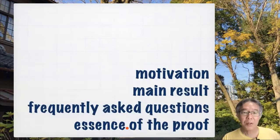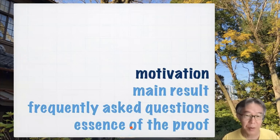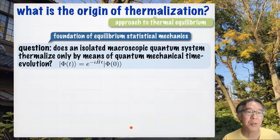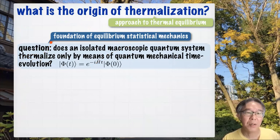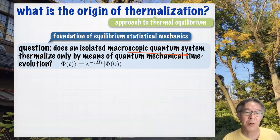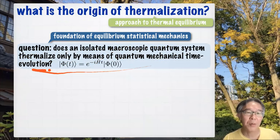This is the table of contents, and let me start from motivation — that is very short, only one slide. We are interested in the origin of thermalization. Thermalization means the approach to thermal equilibrium. Our basic question, which is directly related to the foundation of equilibrium statistical mechanics, is whether an isolated macroscopic quantum system thermalizes only by means of quantum mechanical time evolution — this unitary time evolution.